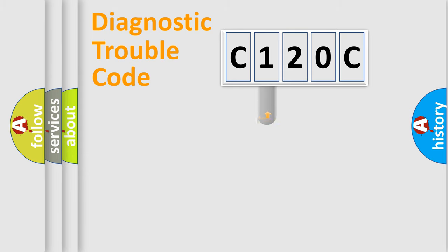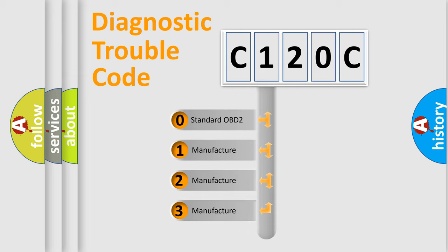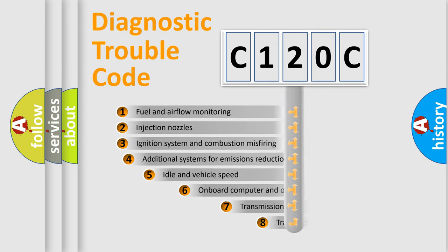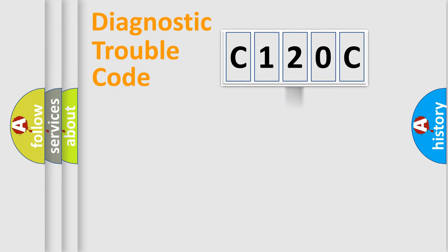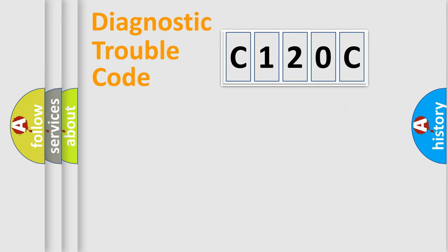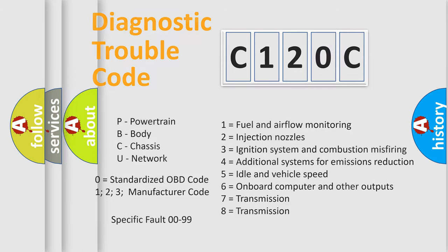This distribution is defined in the first character of the code. If the second character is expressed as zero, it is a standardized error. In the case of numbers 1, 2, or 3, it is a more specific expression of a car-specific error. The third character specifies a subset of errors. This distribution is valid only for the standardized DTC code, and only the last two characters define the specific fault of the group. Such a division is valid only if the second character code is expressed by the number zero.